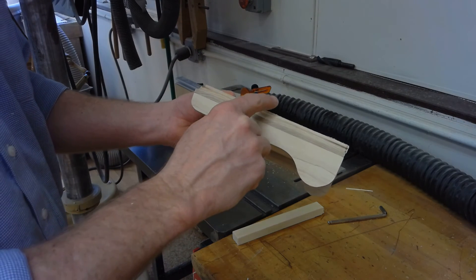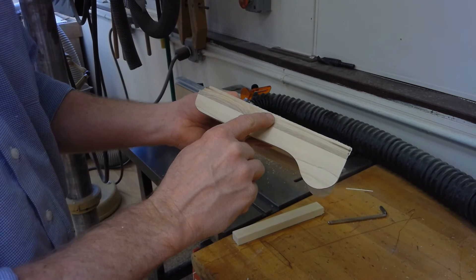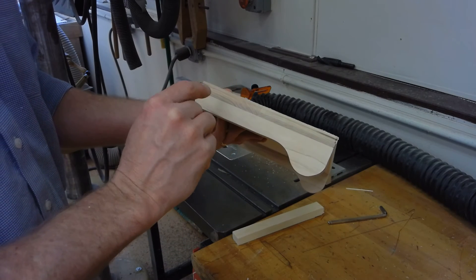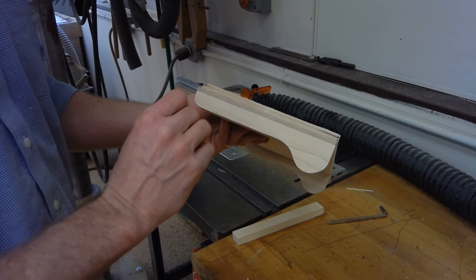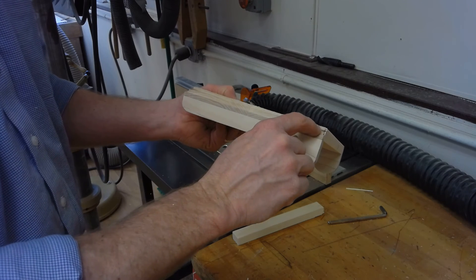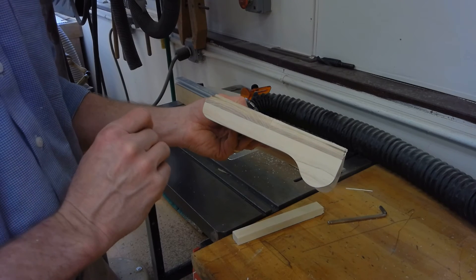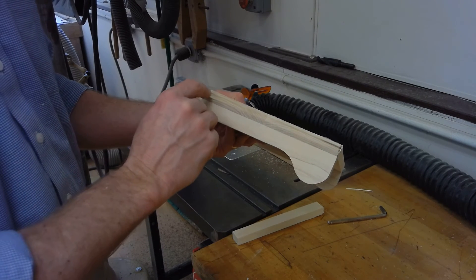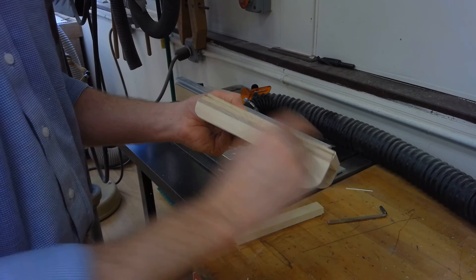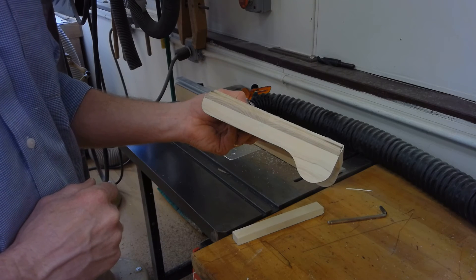So I ran it through again. It made the profile just a little bit deeper. It was much easier to router this time because it wasn't taking off as much, but I still have some burning right here and some burning right here. So I'm going to take some real fine sandpaper and see if I can get rid of some of that burning along the edge.